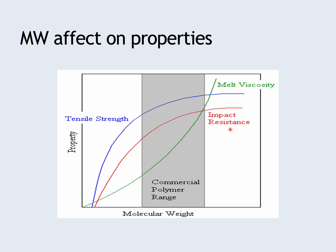We kind of know why we measure mechanical properties and why those are important. Viscosity is important for the purposes of molding or shaping a polymer into a part — if the viscosity gets too high, it can be really difficult to form the polymer. So that will be a trade-off when you're thinking about the molecular weight you want to work with.